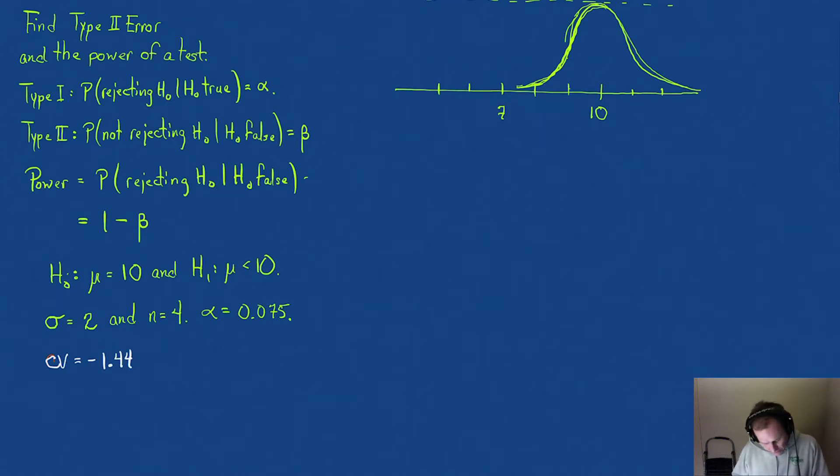Let's actually convert that into what data value this corresponds to. We would use our formula: Z equals X̄ minus the mean, divided by sigma over the square root of our sample size.